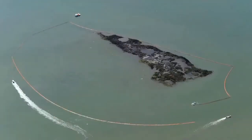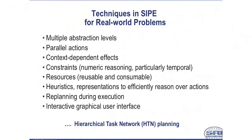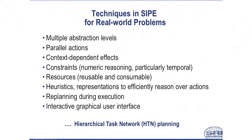On the first slide, we'll see an example of one of the domains that SIPE encoded for planning: the response to oil spills. In this picture, we see several boats deploying boom around an island to protect it from an oil spill. The key point is that there are multiple boats executing this plan, and it's important to have a sufficient amount of boom to go around the island. On the next slide, we'll see a number of techniques that SIPE developed to address real-world problems. This list was driven by client needs, not by any research agenda. Some of these techniques are now called hierarchical task network planning, and SIPE is known as an HTN planner.